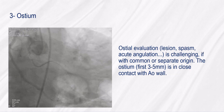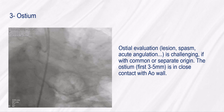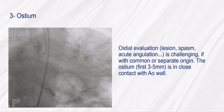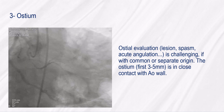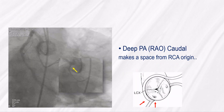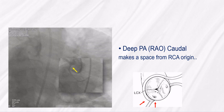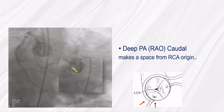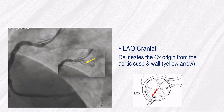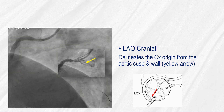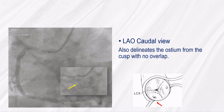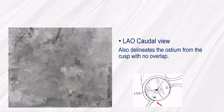Regarding ostium evaluation: lesion, spasm, and acute angulation are challenging, especially with common or separate origin. The ostium and first 3–5 mm are in close contact with the aortic wall. A deep PA or RAO caudal makes space from the RCA origin. LAO cranial may help; it delineates the CX origin from the aortic cusp and wall. LAO caudal view also delineates the ostium from the cusp with no overlap.